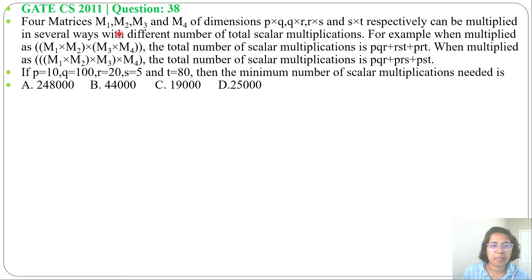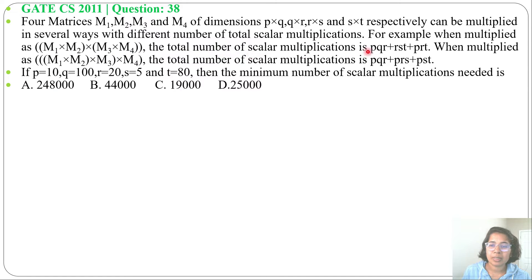Four matrices M1, M2, M3 and M4 of dimensions P×Q, Q×R, R×S and S×T respectively can be multiplied in several ways with different numbers of total scalar multiplications. For example, when multiplied as (M1·M2)(M3·M4) — first multiply M1 with M2, then M3 with M4, then multiply those results — the total scalar multiplications is PQR + RST + PRT.